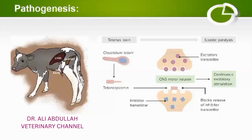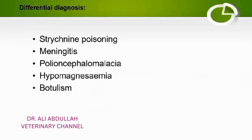Moving to the differential diagnosis of tetanus: the first is strychnine poisoning, in which you will not see elevated temperature or heart rate, but will see hyperemic conjunctiva, vomiting, and diarrhea. In meningitis, you will not see spastic paralysis of the whole body but may see opisthotonos or head pressing. In polioencephalomalacia, you will not see higher temperature or spastic paralysis, but will see blindness.